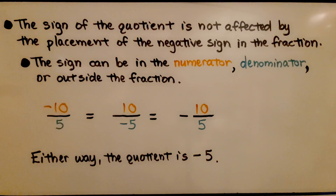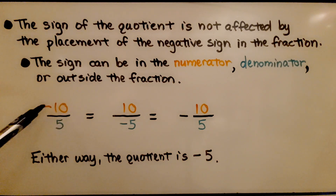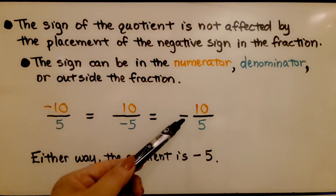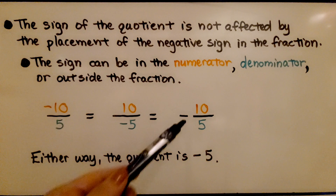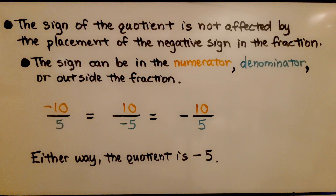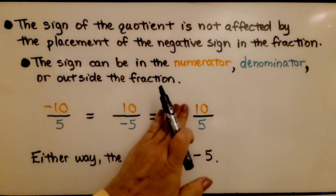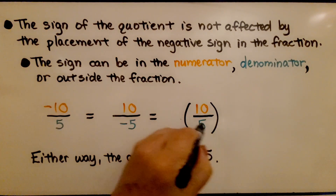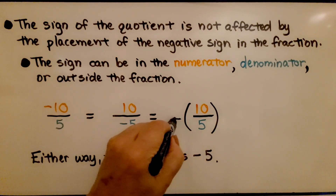The sign of the quotient is not affected by the placement of the negative sign in the fraction. The sign can be in the numerator, in the denominator, or outside of the fraction. Either way, the quotient is the same — for example, negative 5.